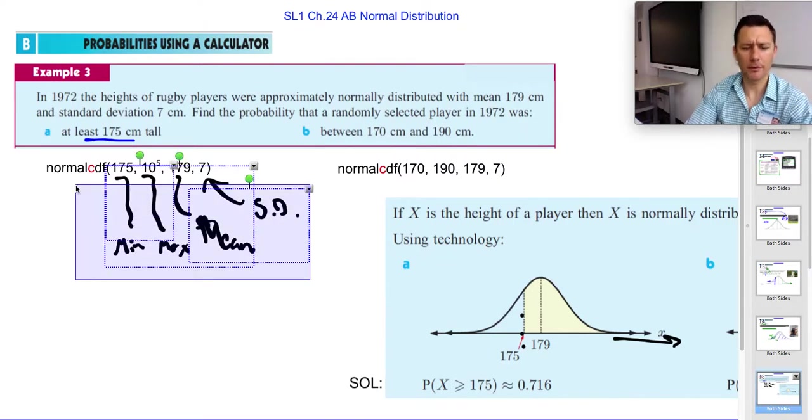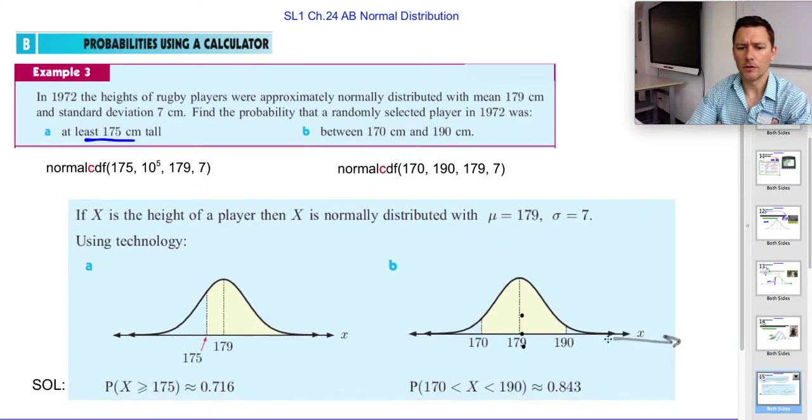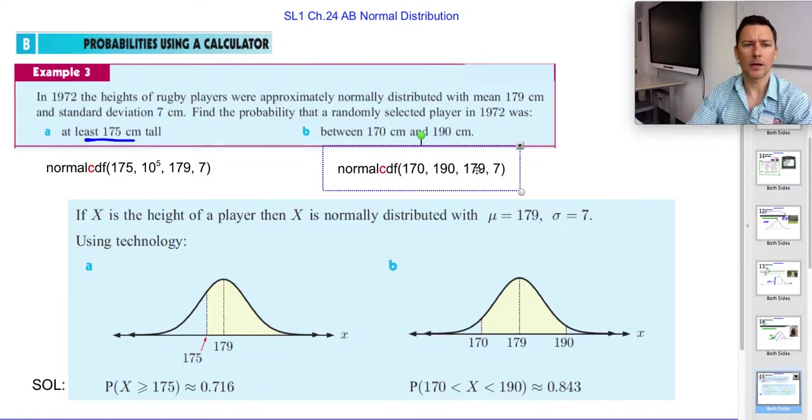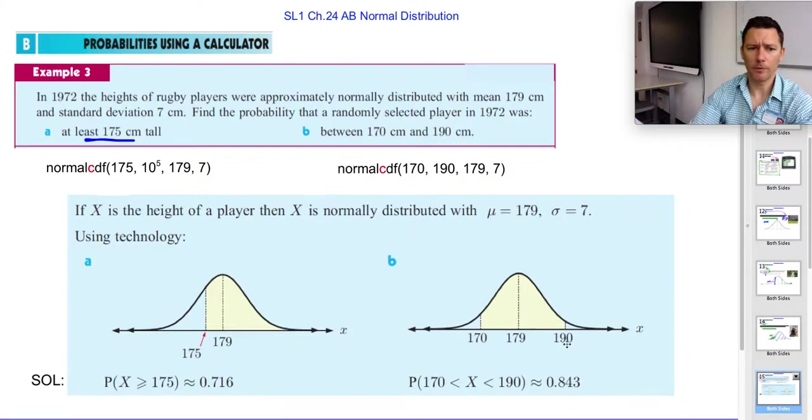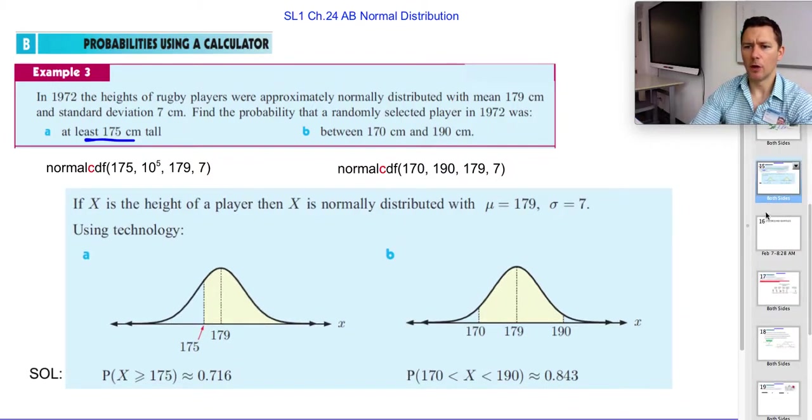And then you can do the same thing for between these two values. You just say I want it between upper and lower limits are 170 and 190. And we keep the same mean and standard deviation because it's the same population of people. Cool. So that's a way to visualize them, too. All right. Hope that helps.